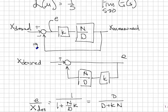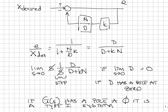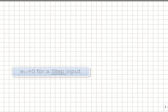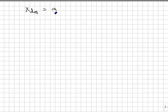The steady-state error will only be 0 if the limit as s goes to 0 of D equals 0, which occurs if D has a pole at 0. So if a system is in unity feedback and this open-loop transfer function has a pole at 0, then the steady-state error to a step input will be 0. This type of analysis is common enough that there are names associated with it: if G(s) has a pole at 0, it's a Type 1 system. Type 1 systems have zero steady-state error when placed in unity feedback.